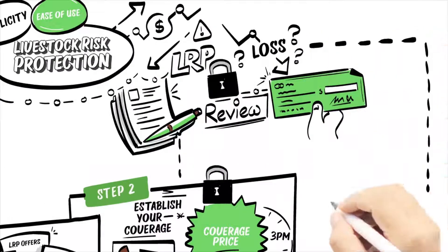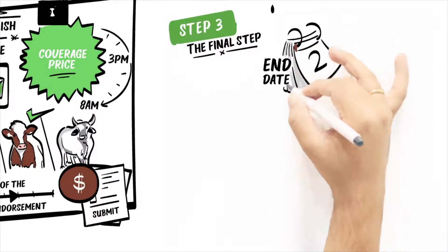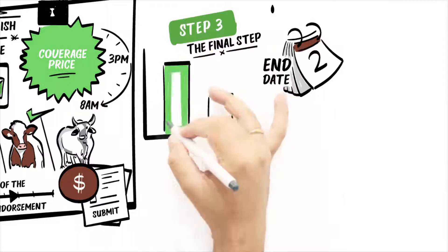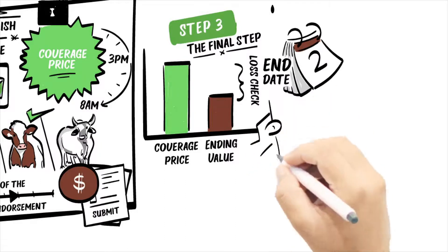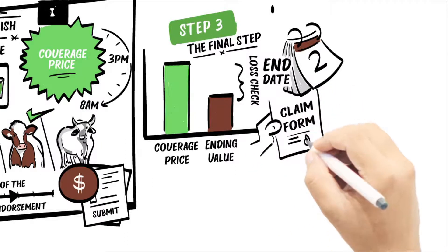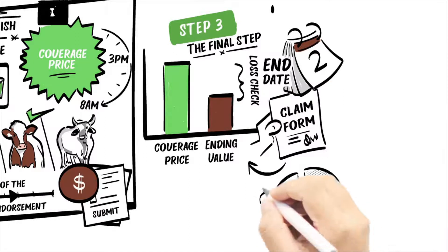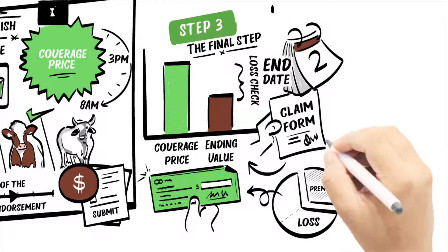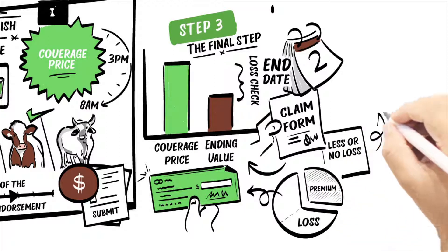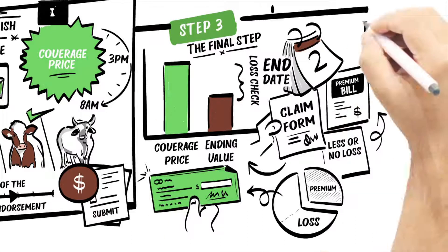The final step of the LRP process comes when the end date of your coverage arrives. If the ending value is less than your previously established coverage price, you're due a loss check for the difference. Your Ag Risk Advisor will forward a claim form for you to sign and return. If your loss is greater than your premium, the insurance company will send you a check for the difference. If your loss is less than your premium, or if no loss is due after coverage ends, the insurance company will send you a premium bill for the cost of coverage.